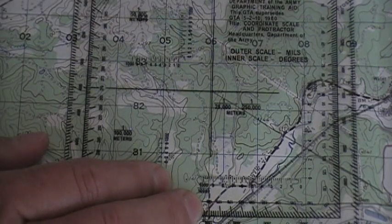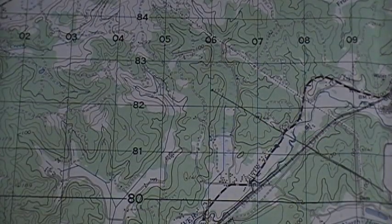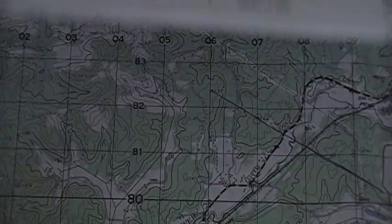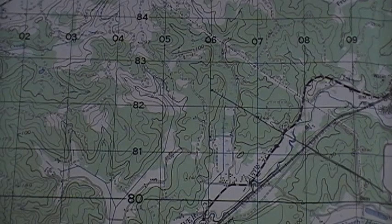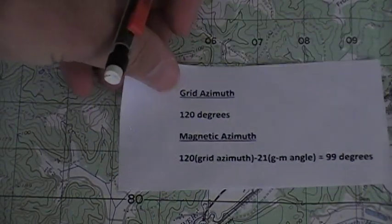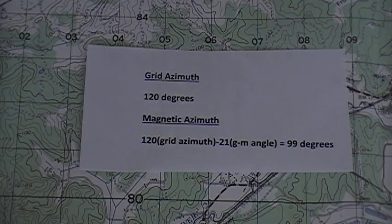Now to convert this to a magnetic azimuth, we must subtract the GM angle. The GM angle for our map is 21 degrees, so we must subtract 21 degrees from our grid azimuth, which is 120, and that is our answer. Grid azimuth: 120 degrees. Magnetic azimuth: 99 degrees.